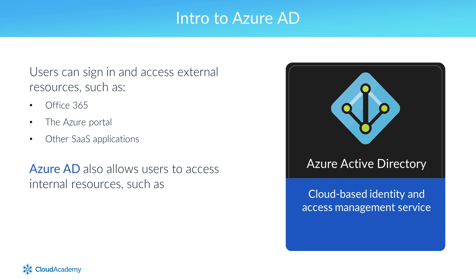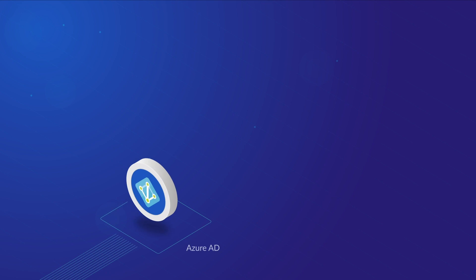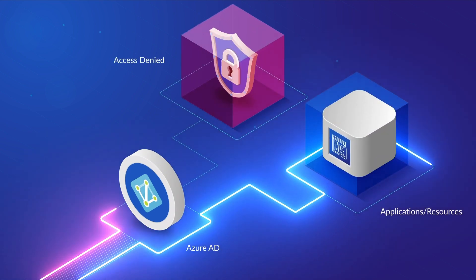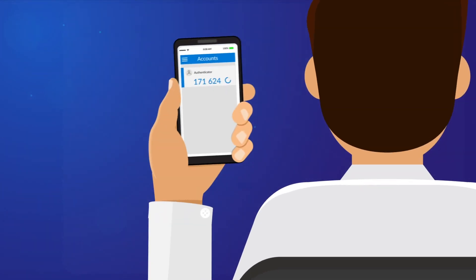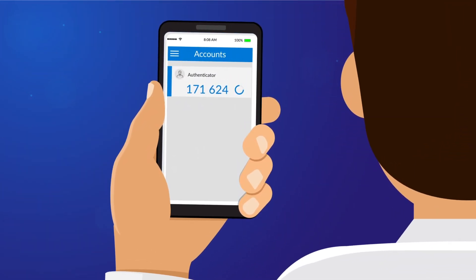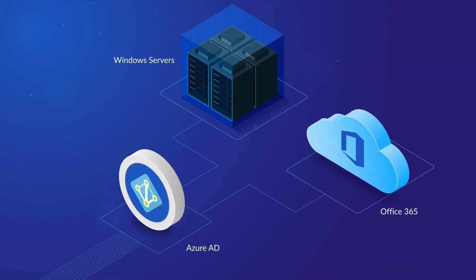Such resources include applications inside the corporate network and on the intranet, along with cloud applications that have been developed and deployed by your organization. Azure AD is used to control access to applications and resources according to business requirements. For example, Azure AD can be configured to require multi-factor authentication, or MFA, when a user needs access to important company resources. In addition, Azure AD can be used to automate user provisioning between an existing on-prem Windows Server AD and corporate cloud applications like Office 365.